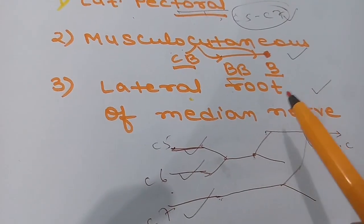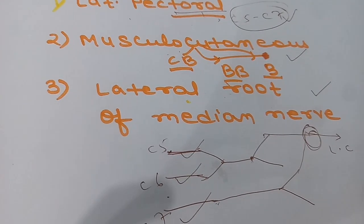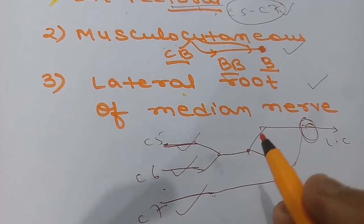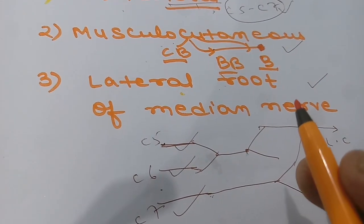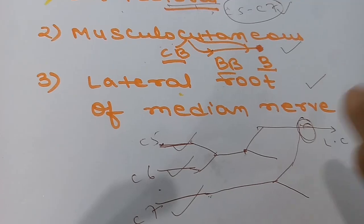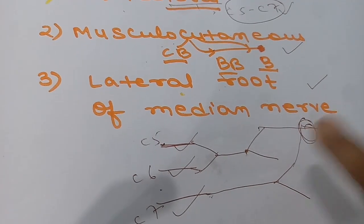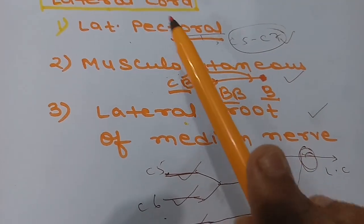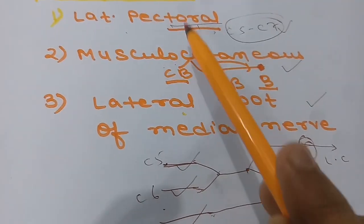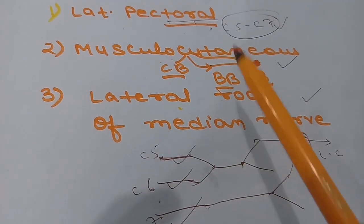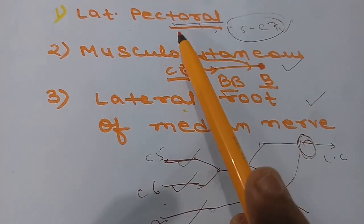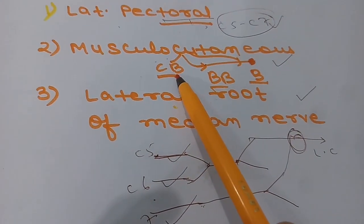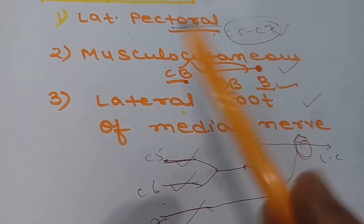The lateral root of the median nerve unites with the medial root of the median nerve, which is a branch from the medial cord, to form the median nerve. It supplies the muscles of the front of the forearm. To revise: the lateral cord has three branches — lateral pectoral nerve, musculocutaneous nerve, and lateral root of median nerve — all with root value C5 to C7. The lateral pectoral nerve supplies pectoralis minor and major; the musculocutaneous nerve supplies coracobrachialis, biceps brachii, and brachialis.